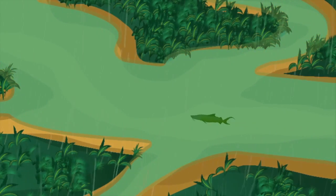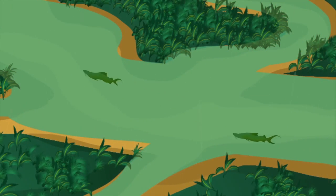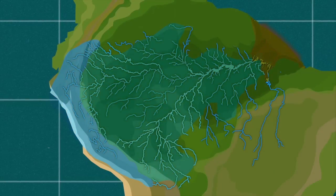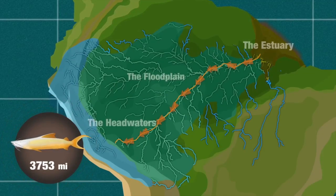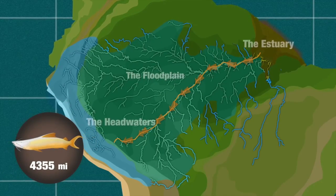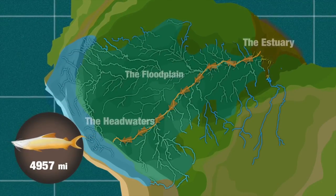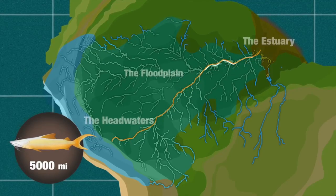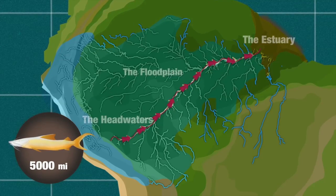Thanks to the rains, what were once channels with little water are now wide and deep rivers, where the Dorada can swim uphill. Thus, swimming upstream, our traveler finally arrives at its destination to breed for the first time and start the cycle again, repeating the same route as that of its parents.